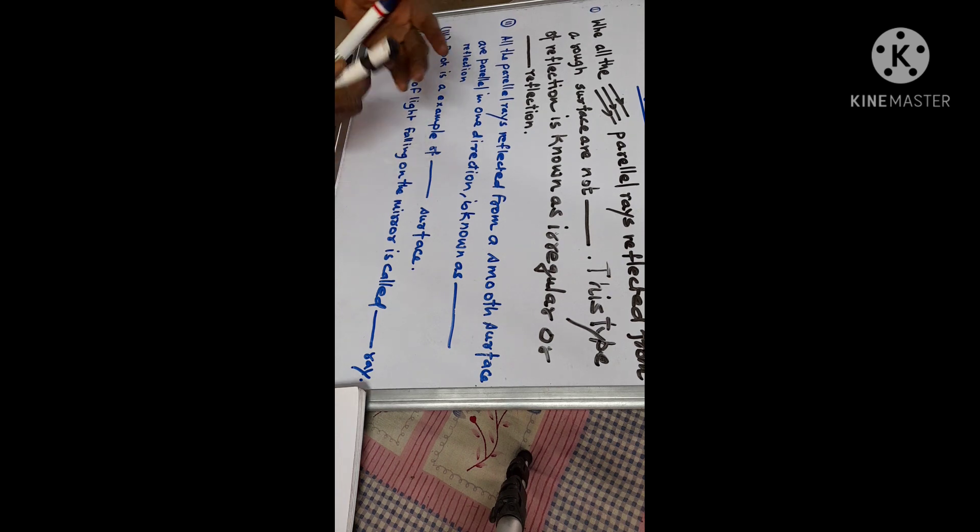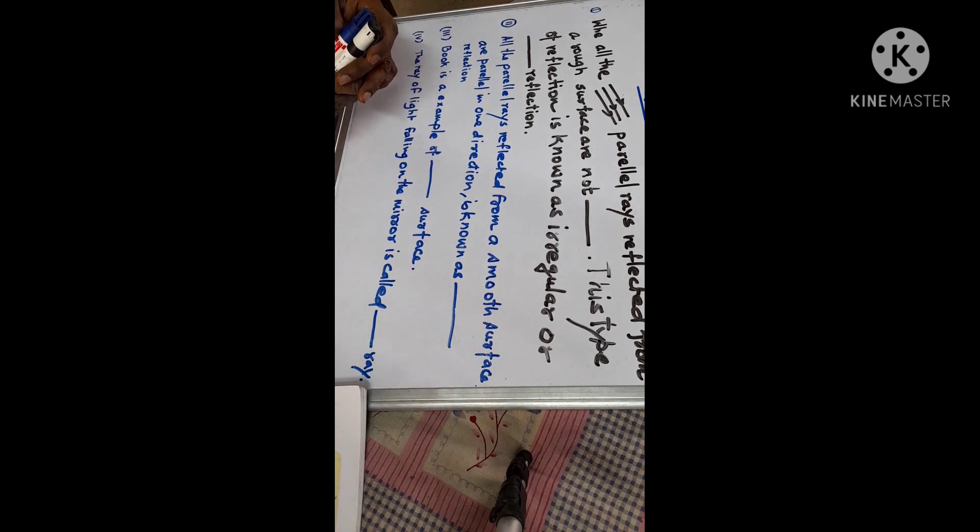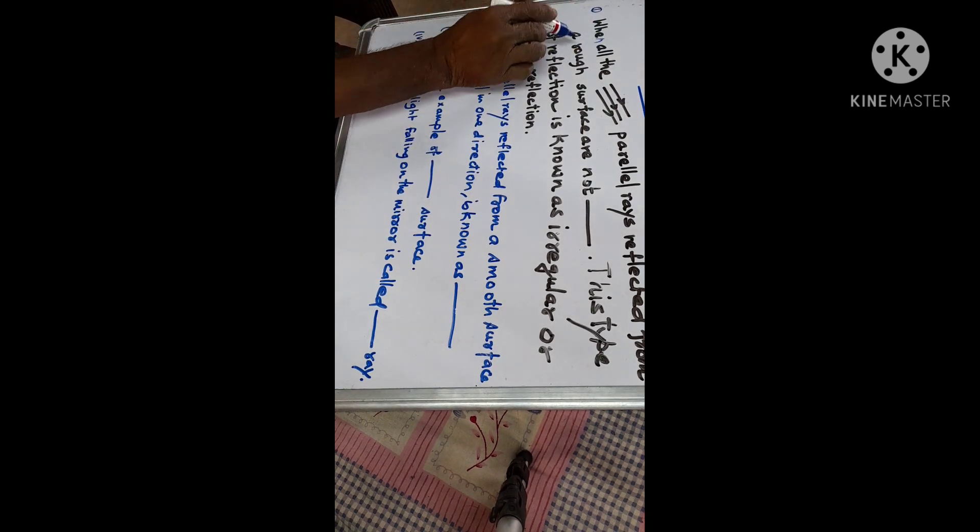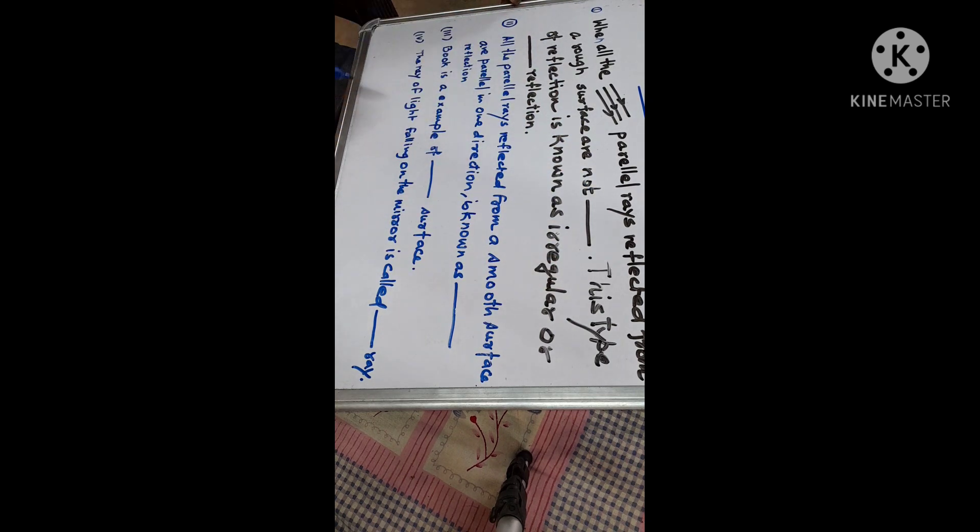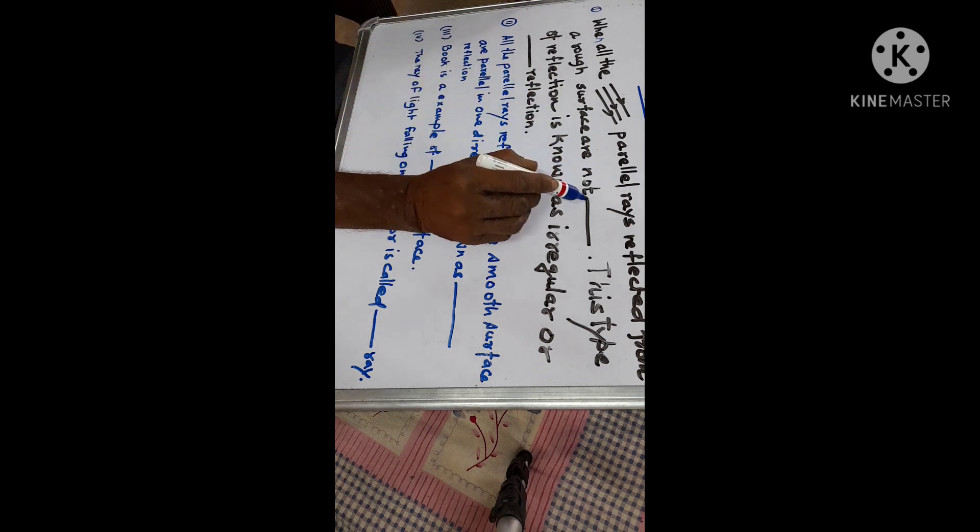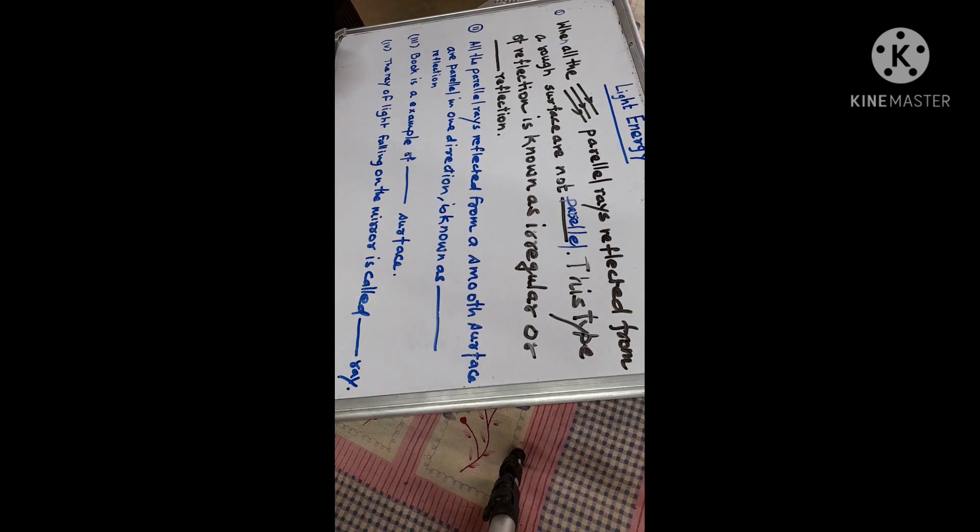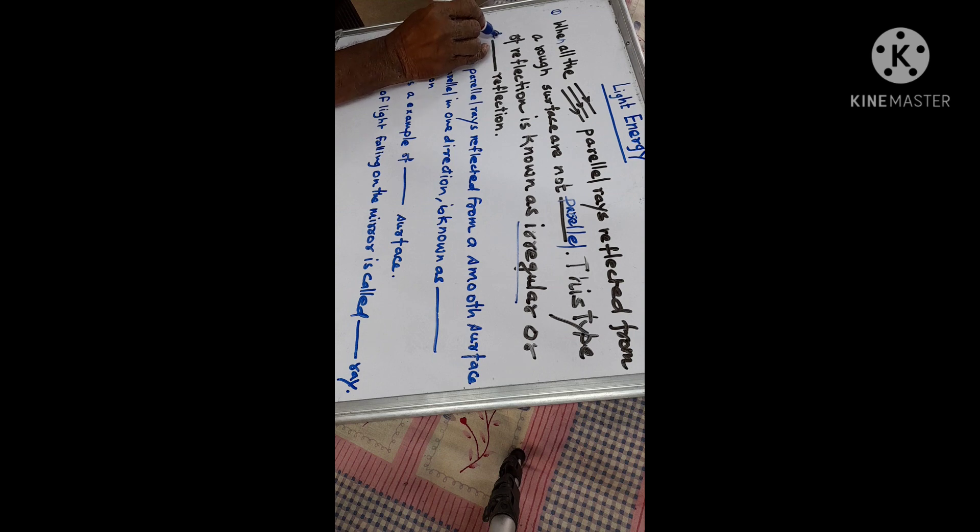So with the help of fill in the blanks we will discuss, we will learn about light energy. We start from the fill in the blanks, first question: when all the parallel rays reflected from a rough surface is not parallel, this type of reflection is known as irregular or diffused reflection.